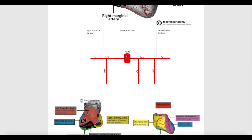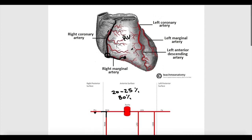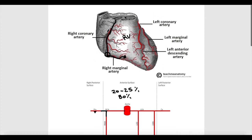To summarize: the ascending aorta gives the right coronary artery, which gives the right marginal artery and continues posteriorly to give the posterior interventricular artery, running in the posterior interventricular groove. Note that the posterior interventricular artery may sometimes arise from the left coronary artery rather than the right — this happens in 20 to 25 percent of people. In approximately 80 percent of people, it arises from the right coronary artery.